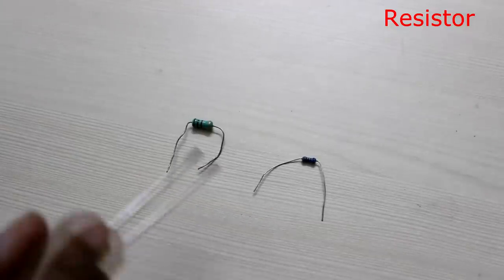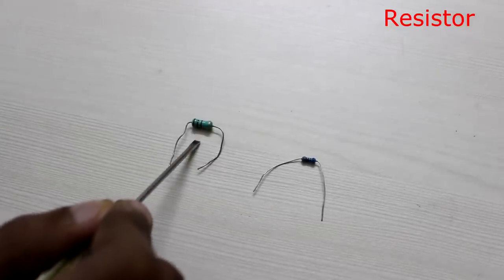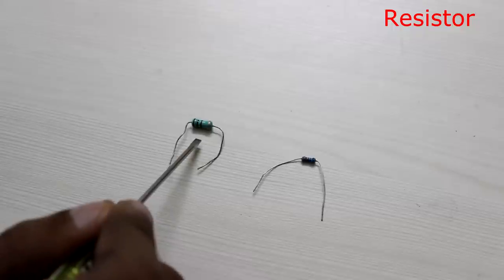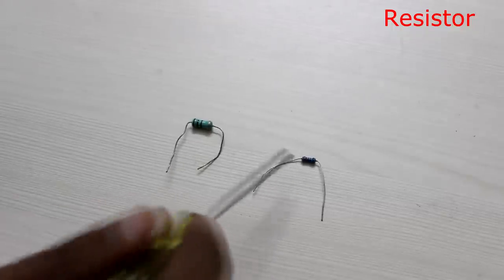This is how a resistor looks like. The value of the resistance can be found by looking at the color bands on the resistor's body. You can look at the link in the description below to learn more. Let's keep this video short. Each resistor has a wattage rating, usually depending on its size. Here I show a 1 watt resistor and a 0.25 watt resistor.